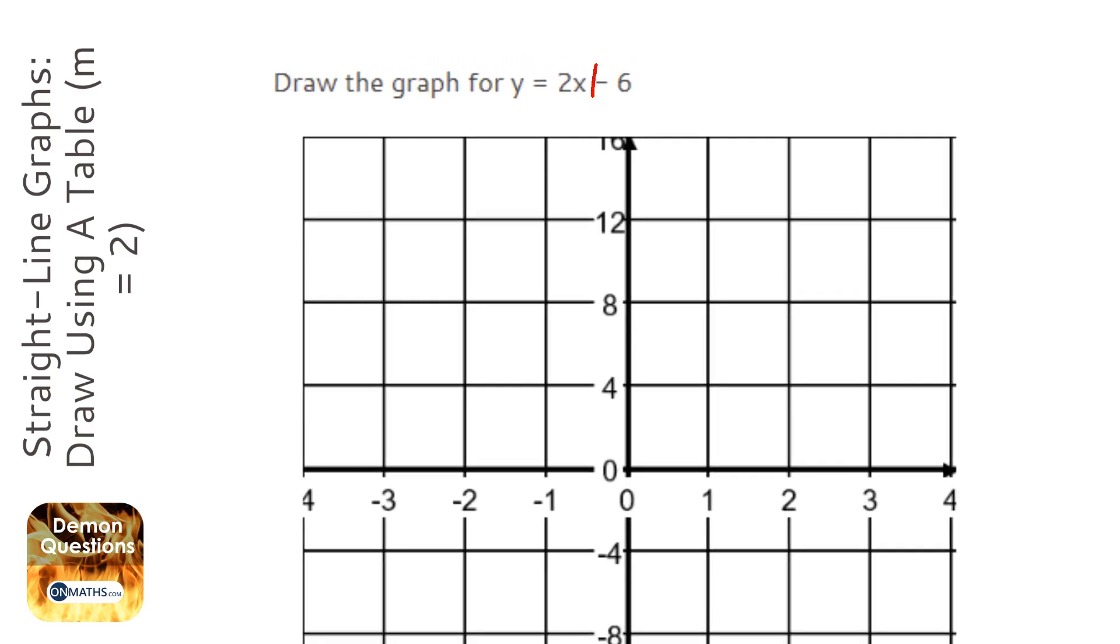There are a couple of ways you can do this. You can use the y-intercept, which is -6, and plot that on the y-axis, and then use the gradient. For every one we go to the right, we go 2 up. Or you can select three points, and we're going to select three points.